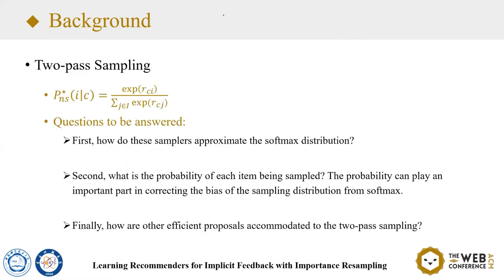However, in these samplers, many questions remain to be answered. The first one is: how do these samplers approximate the softmax distribution? There is no work answering these questions. And the second one: what is the probability of each item being sampled in this method? The probability can play an important role in correcting the bias of the sampling distribution from softmax, especially in contributing to the loss function. And finally: how are other efficient proposals accommodated to the two-pass sampling?